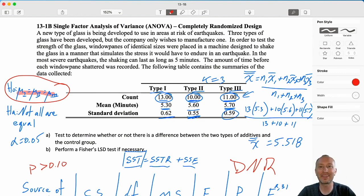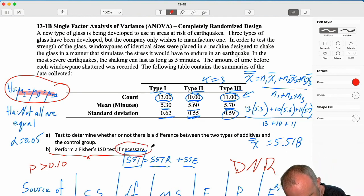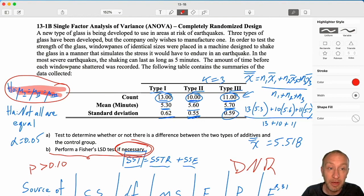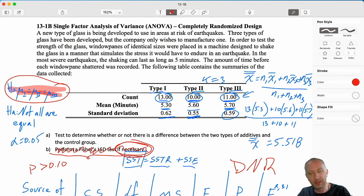So that's it for this exercise. Here we can see Perform a Fisher's LSD if necessary. This being the key phrase, if necessary, because we are not rejecting the null hypothesis, we've already found no reason to believe that a difference exists. Therefore, it is not necessary that we look for a difference. So Fisher's LSD, not necessary. We are finished. Thank you all for watching. Hope this was helpful. Bye-bye.